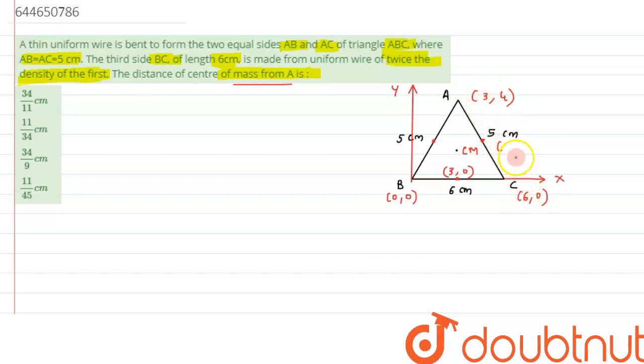That is 3 plus 6 is 9 and 9 divide by 2 that is since this point is a midpoint so we will write here as 4.5 and here 4 plus 0 by 2 that is 2 and this coordinate similar way we can write it as this coordinate will be (1.5, 2).